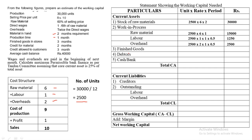Finished Goods: rate is always cost of production = ₹9; period = 3 months; 2,500 × 9 × 3 = ₹67,500. Debtors: rate is always selling price = ₹10; period = 3 months (credit allowed to customers); 2,500 × 10 × 3 = ₹75,000. Cash balance is given directly as ₹40,000.